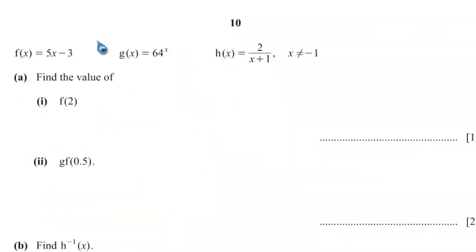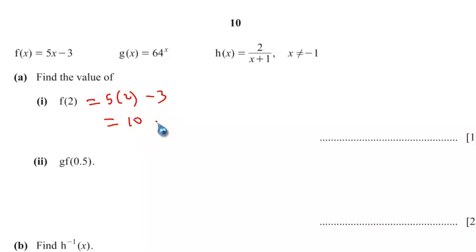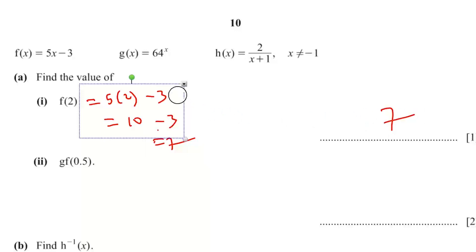This is question 6 from paper 0580/43, October-November 2023. f(x), g(x), and h(x) are given. Find f(2): substitute 2 into f(x) to get 5 times 2 minus 3 equals 10 minus 3 equals 7.